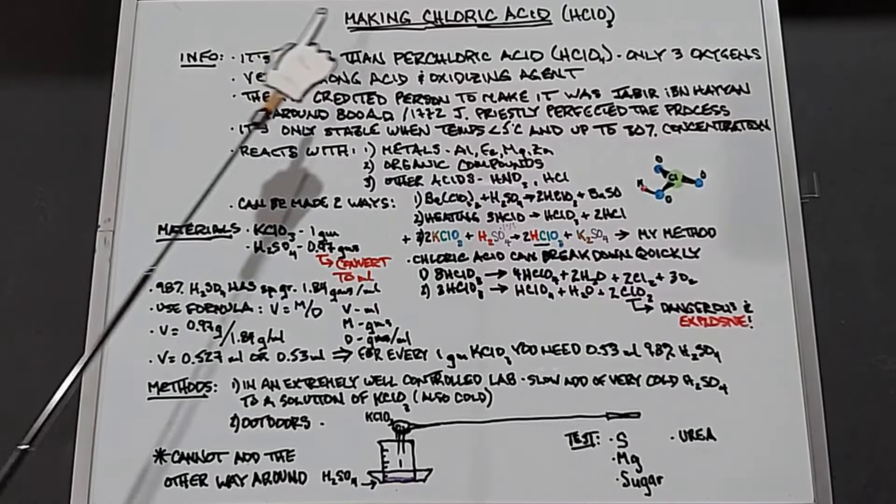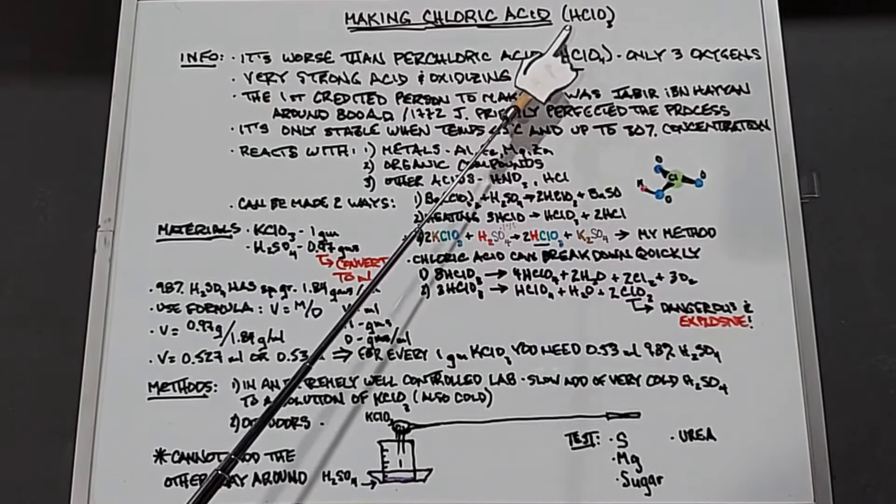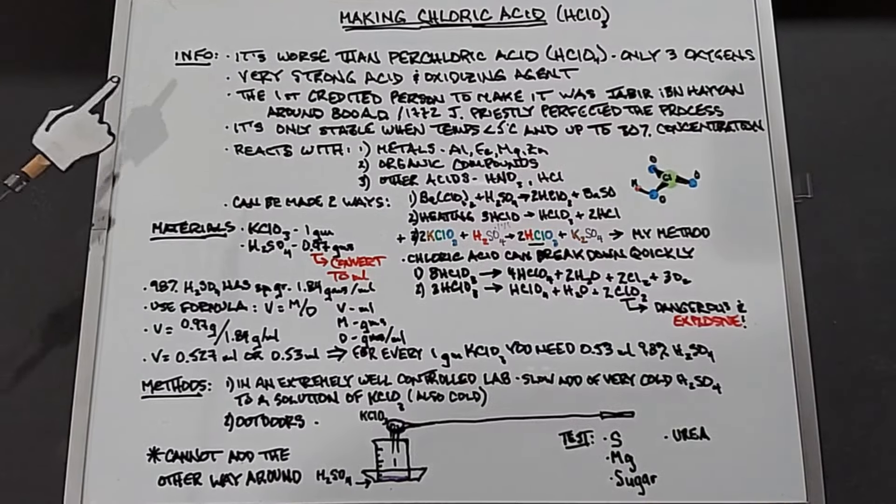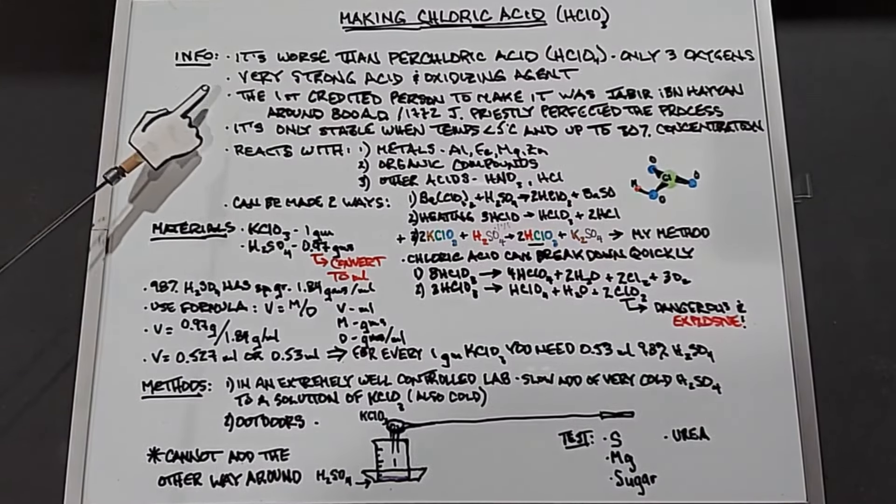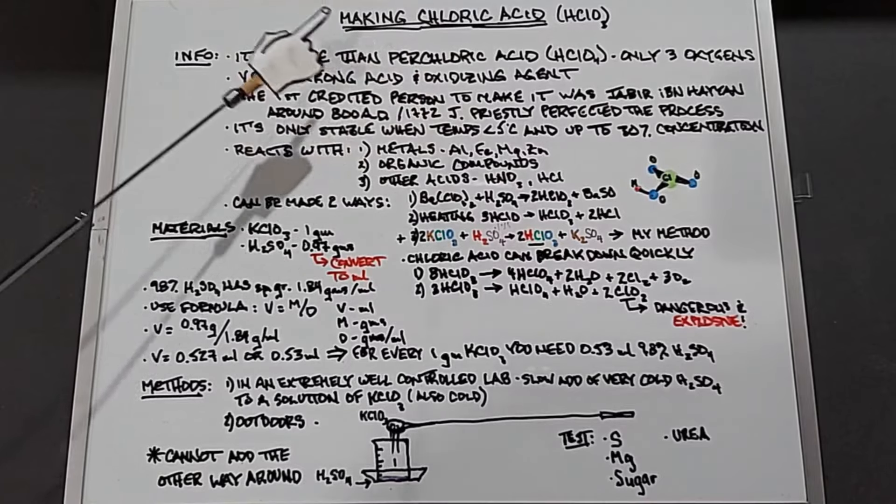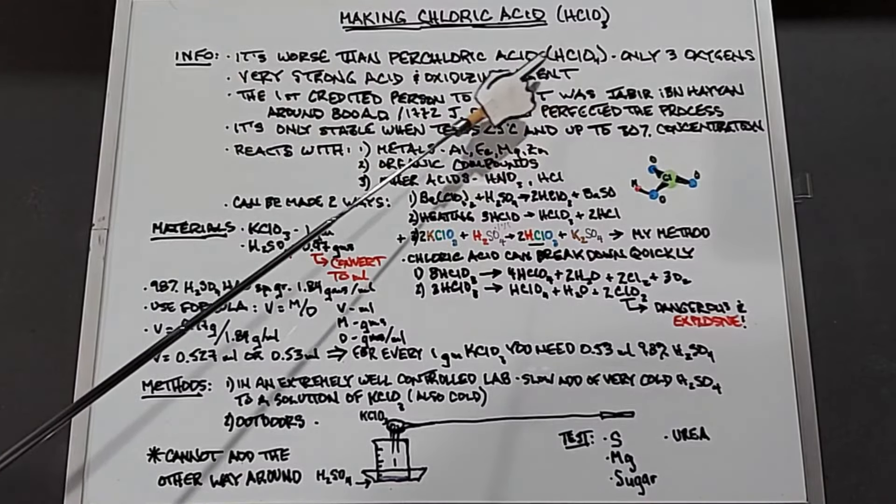In this video we are going to look at making chloric acid HClO3. Chloric acid is much more reactive than perchloric acid. Perchloric acid has four oxygens which is a stable configuration. The odd number of O3 makes each oxygen not bonded as well to the chlorine as if there were four.